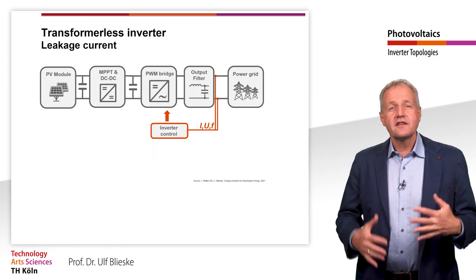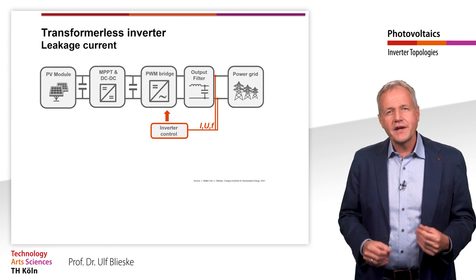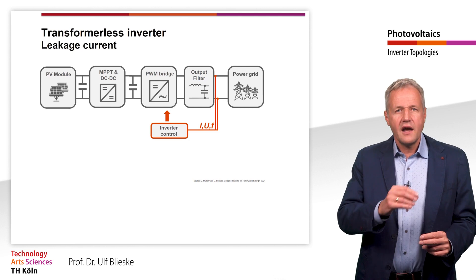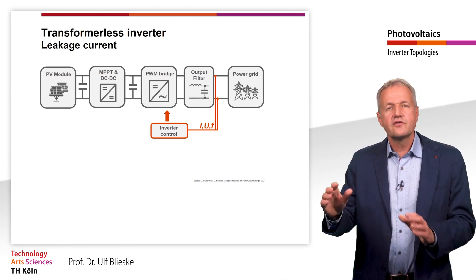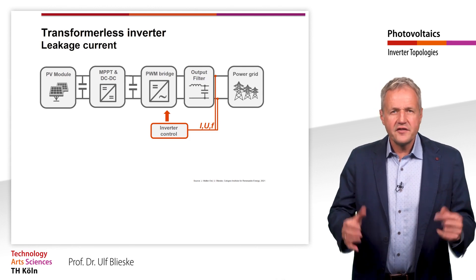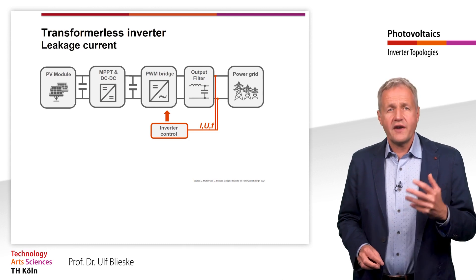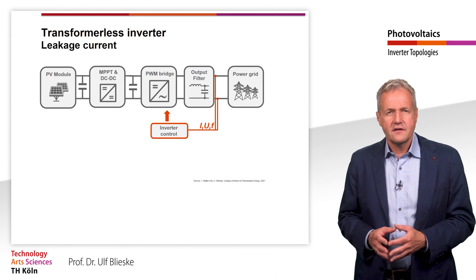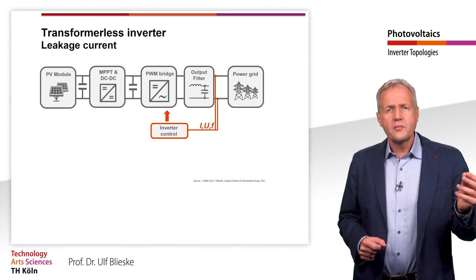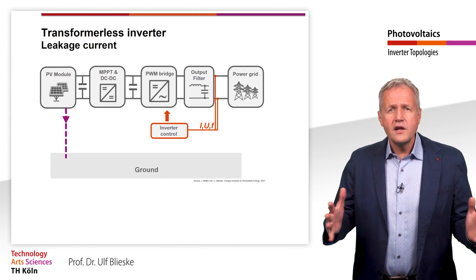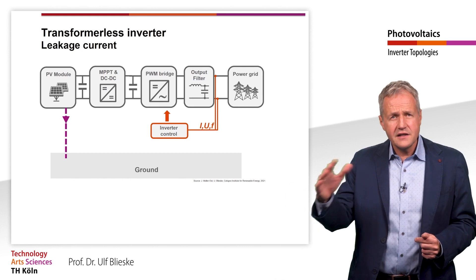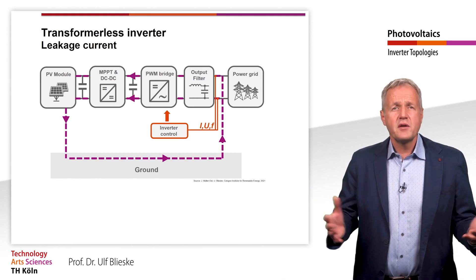The inverter we just discussed is a transformerless inverter. This means that the solar generator is electrically connected to the public grid via the inverter — so we have a closed circuit. Electrons flow from the negative pole of the solar generator through the inverter circuit into the public grid, and from there through the inverter back to the positive pole of the solar generator. If there is a fault in the system, for example due to defective insulation, another current path can arise. If an earthed person touches such a defective contact, a current flows through the person to earth. The only other earthed point in this circuit is the output of the inverter, so the current must flow back into the system through the output — therefore it can be measured as a fault current.